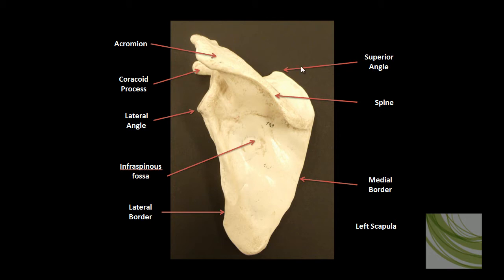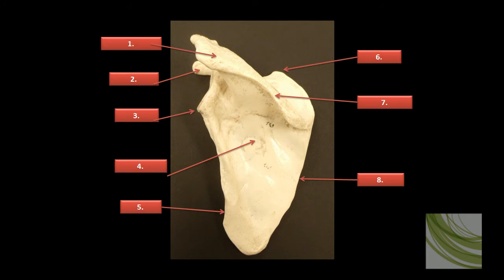Up here at the very top is the superior angle. Now you can quiz yourself. All you have to do is hit pause on the video and write down what you think the anatomical parts of the scapula are. When you're ready, start the video back and you will see a labeled picture of this bone once again.